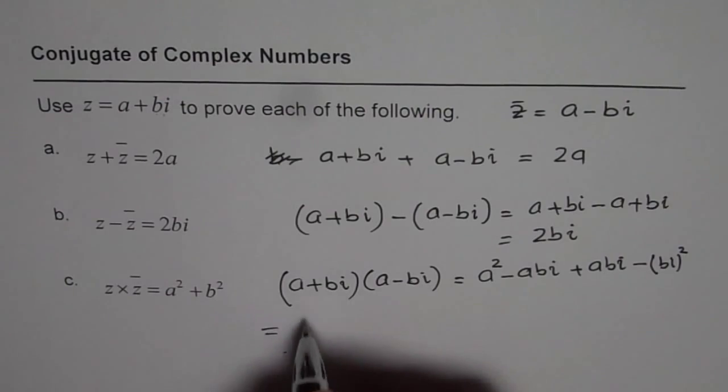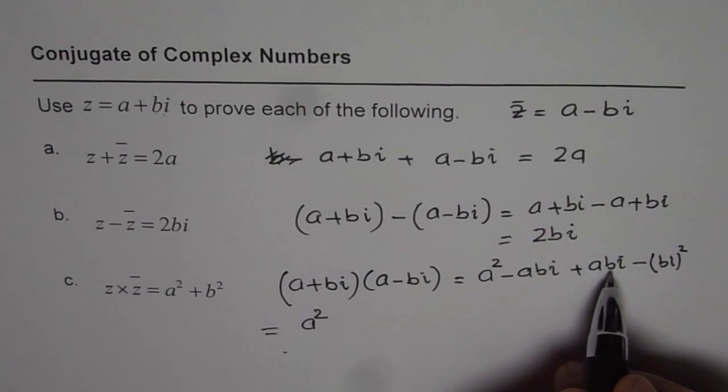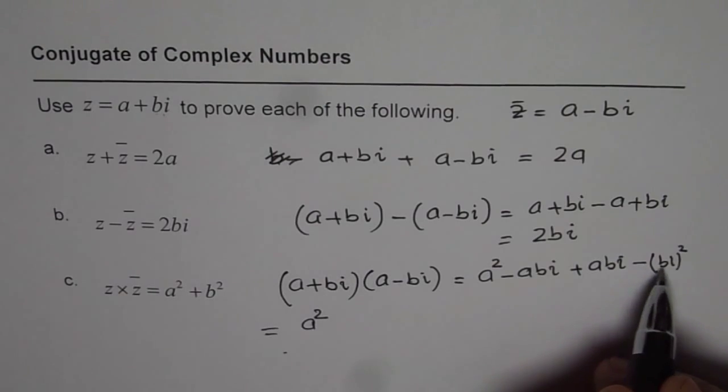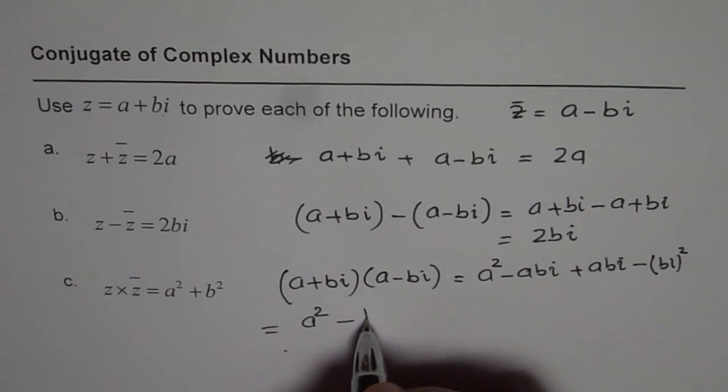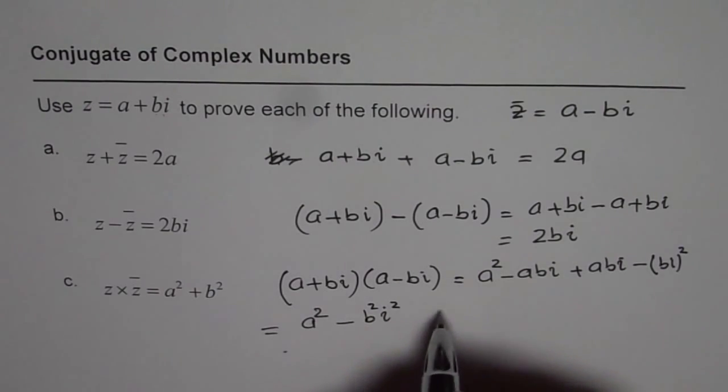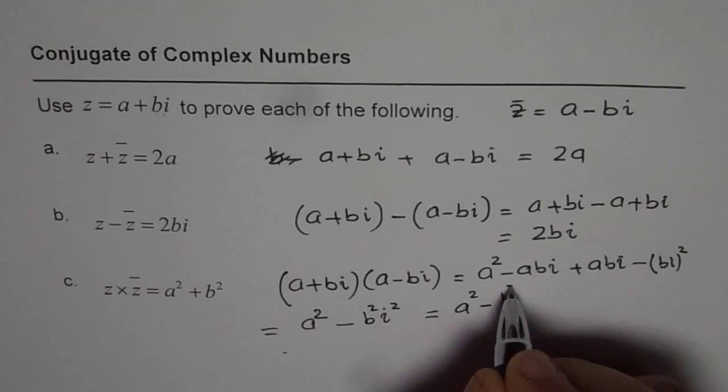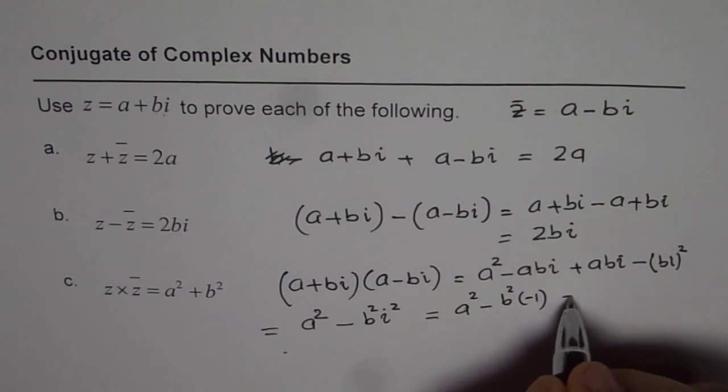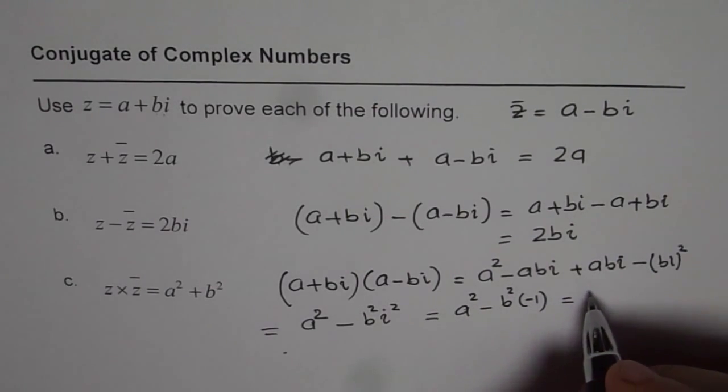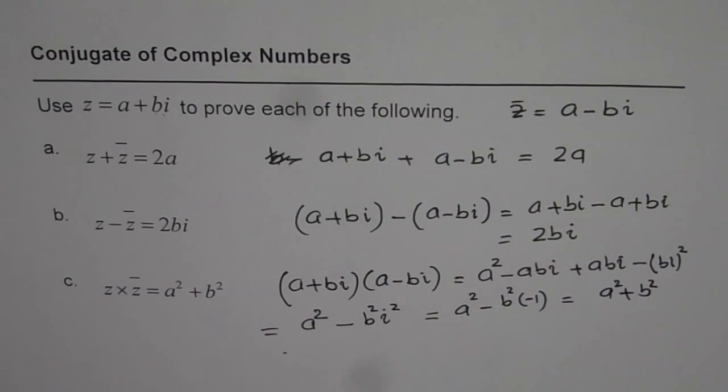So we have a square minus abi plus abi is 0, and minus bi square is minus b square i square. Now as you know, what is i square? I square is minus 1. So we have a square minus b square times minus 1. Minus 1 and minus becomes positive, so we get a square plus b square. So that is how we can prove it.